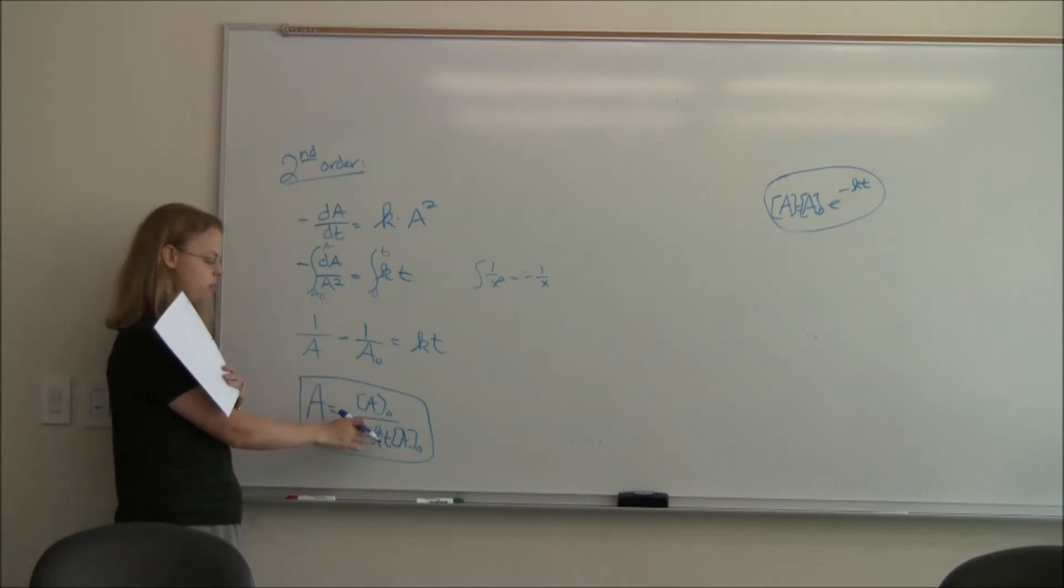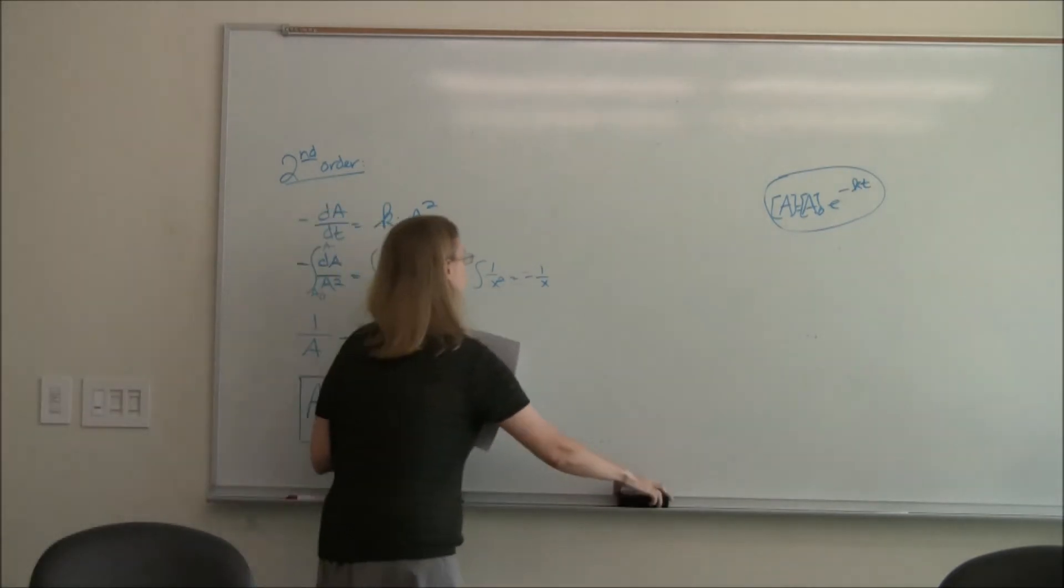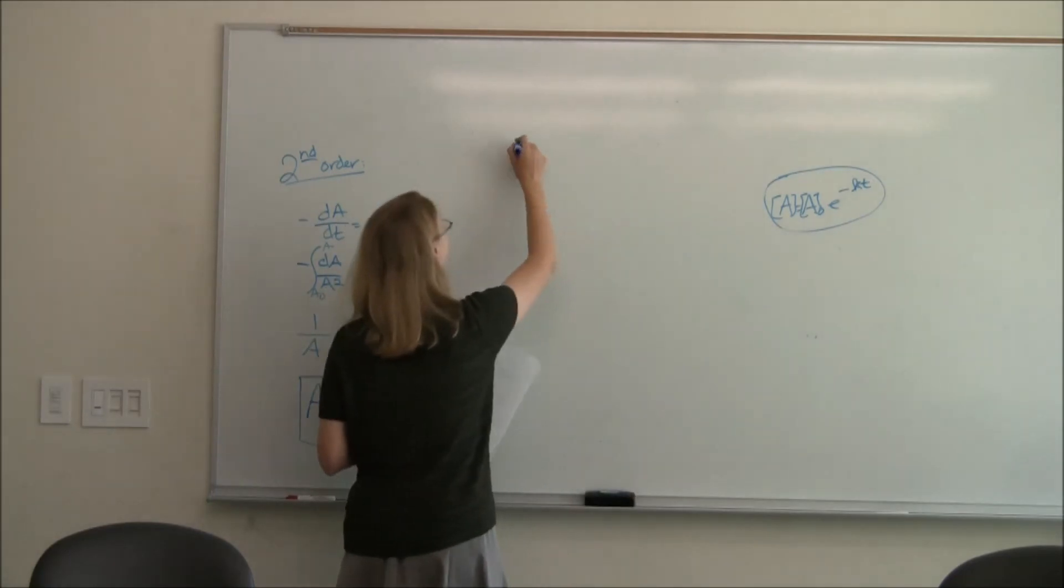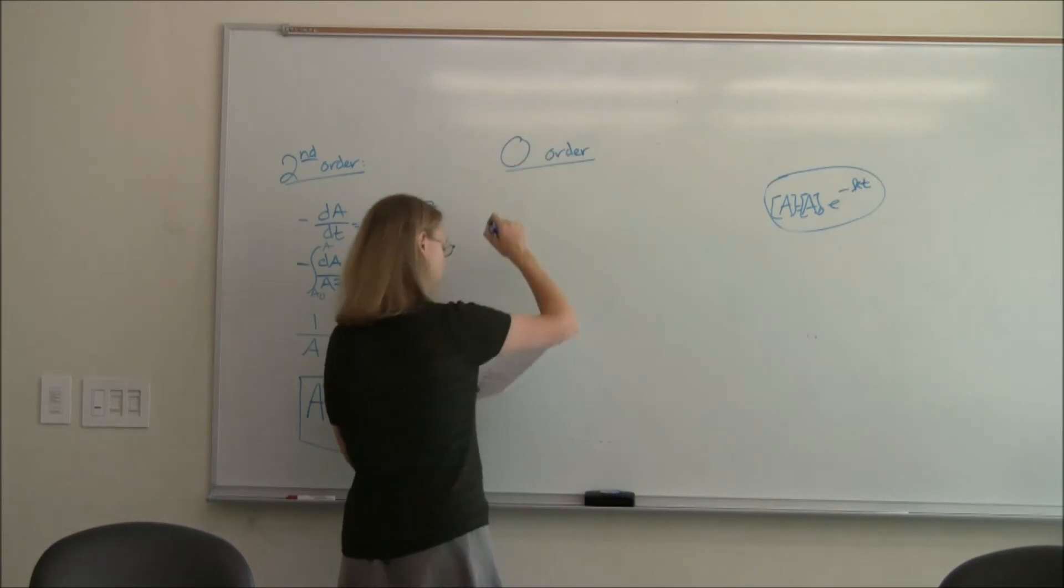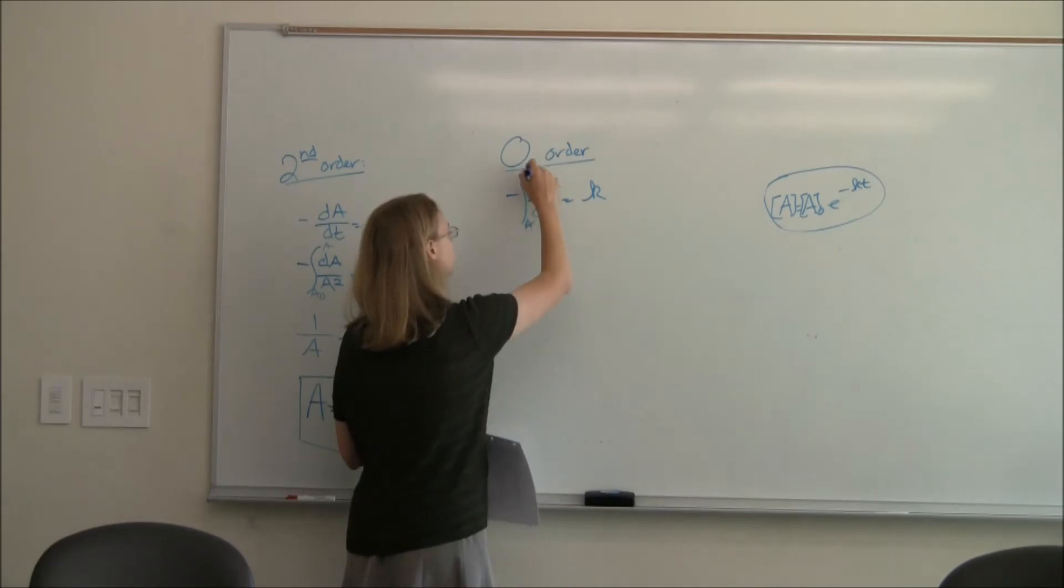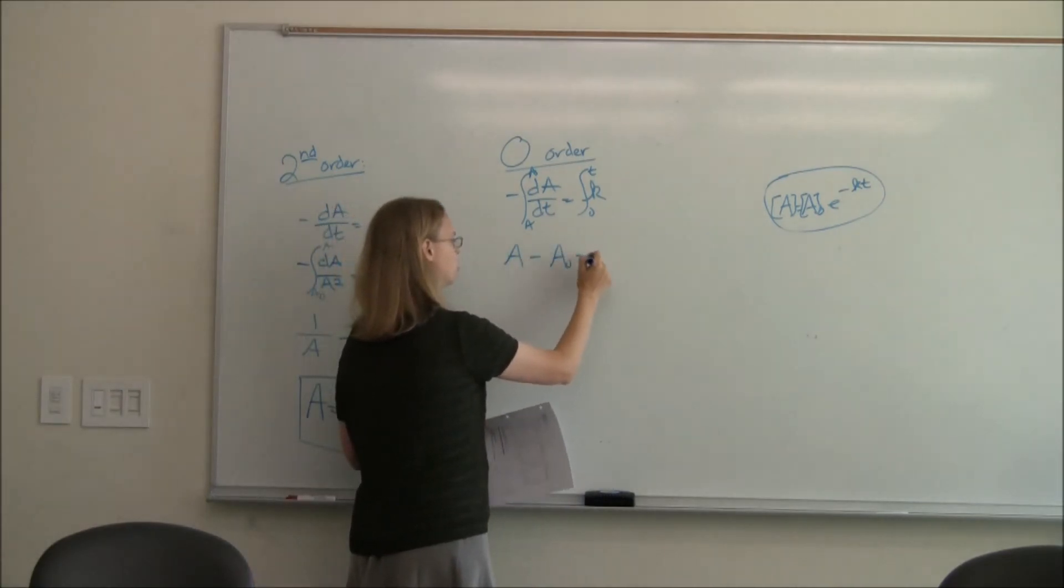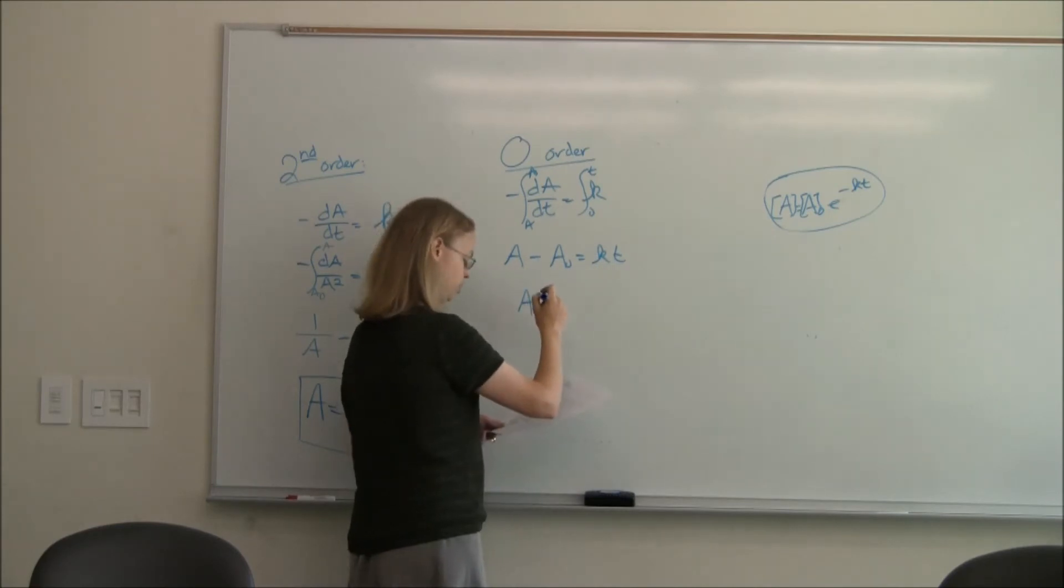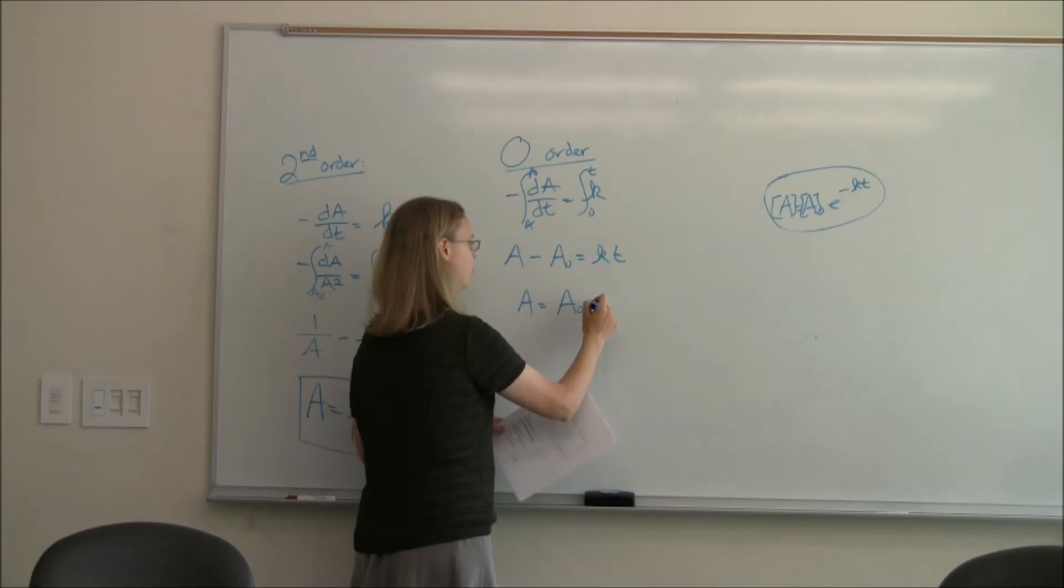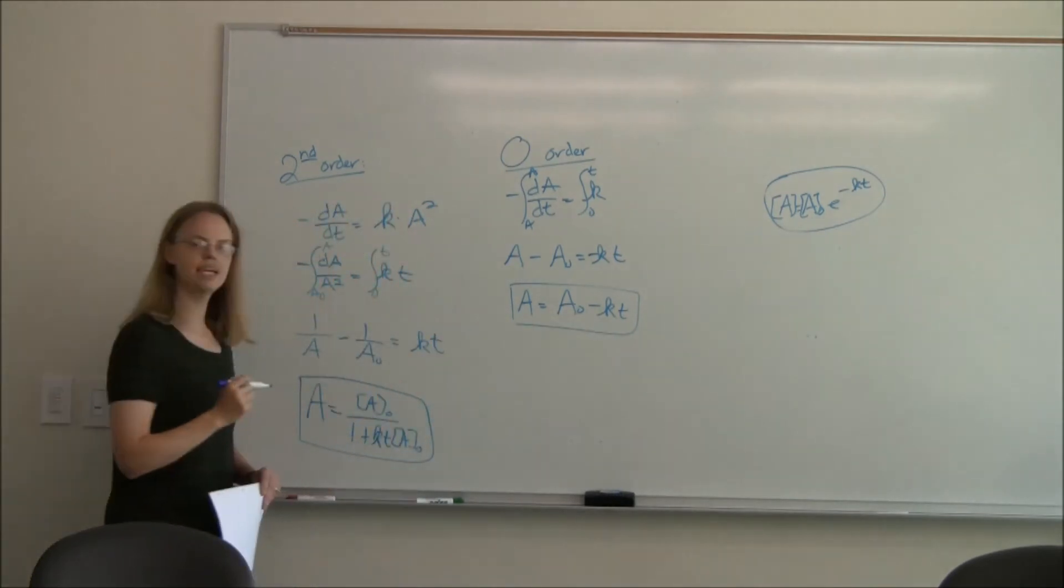So if we solve that one for A, we would get A is equal to A zero over one plus kt times A zero. And so that's the overall equation. So you see we kind of have a one over relationship here, where A depends on a one over reaction. Let's do the zero order real quick. I'll erase my math. So again, minus dA dt is equal to k, because there's no concentration of A. And if we integrate these between A and A zero, zero, and t, we just end up getting this. A minus A zero is equal to minus kt, or A is equal to A zero minus kt.